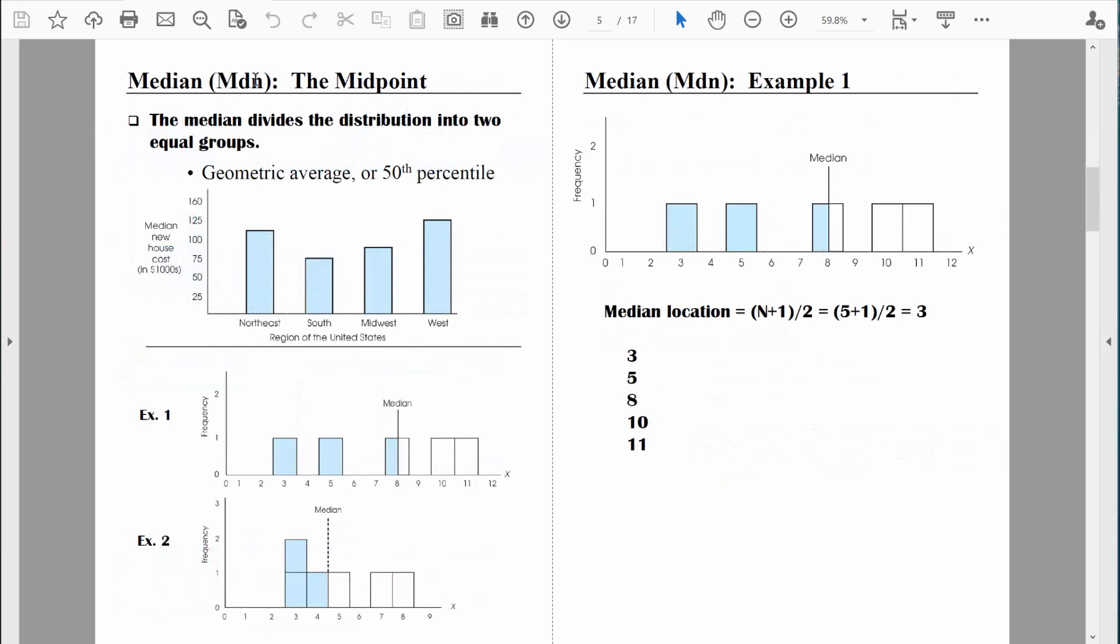The median is sometimes abbreviated MDN. The median really is simply a midpoint. If you were to take all the scores in a dataset and line them up from smallest to biggest, the median would simply be the point right in the middle. So the median divides a distribution into two equal groups. And when I say equal groups, I mean an equal number of data points on each side. That's why I like to describe the median as the geometric average. It's the average based on its geometry, where it's located. And here's another fun fact: the median is the 50th percentile. Because remember, the 50th percentile is the point at which 50% of the scores are at that point or less. So it's the point right in the middle.